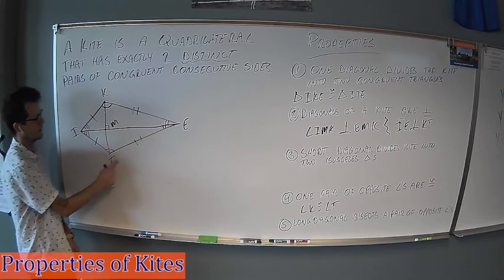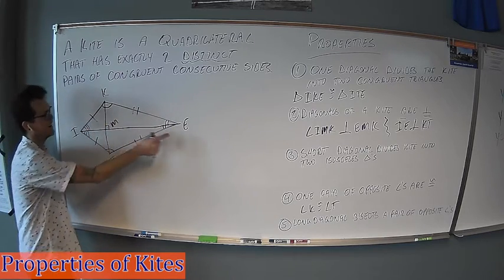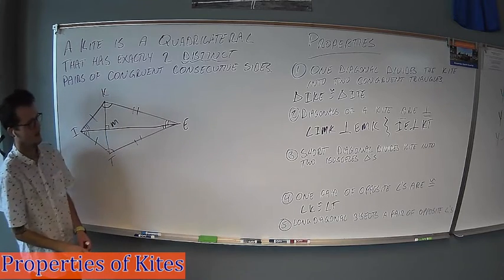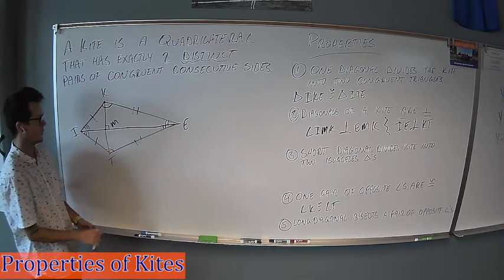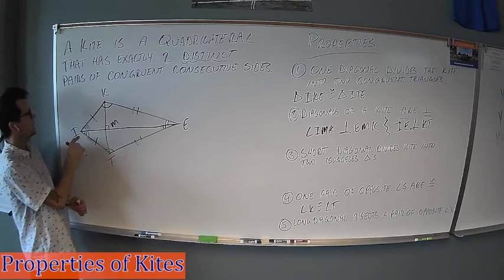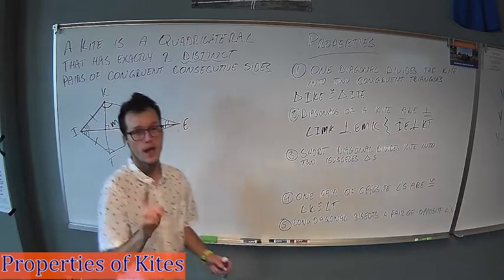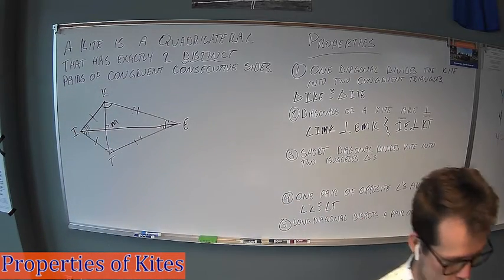But angle K, angle I, angle T, angle K, angle I and angle E are all different angle measures. The only ones that are the same are K and T, like we talked about in property number four. So property five, again, the long diagonal is chopping angle I in half. It's also chopping angle E in half. Hang on one moment. We'll do an example together.